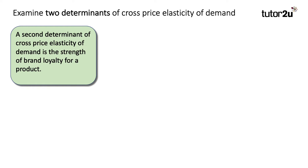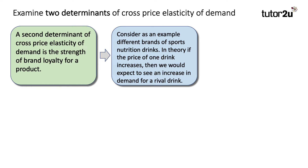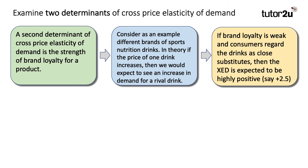A second determinant of cross price elasticity is the strength of brand loyalty for a particular product. Consider, as an example, different brands competing in the market for sports nutrition drinks. In theory, if the price of one drink goes up, we would expect to see an increased demand for a rival drink — a substitution effect would take place. If brand loyalty is weak and consumers regard the drinks as pretty similar, as close substitutes, then we'd expect the cross price elasticity of demand, XED, to be highly positive — say, plus 2.5. A 10% increase in the price of one drink might lead to a 25% increase in the demand for a rival brand.